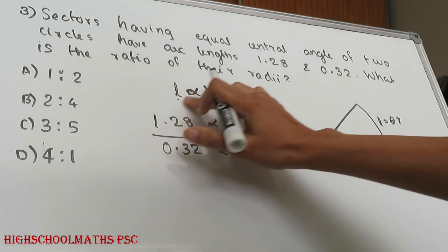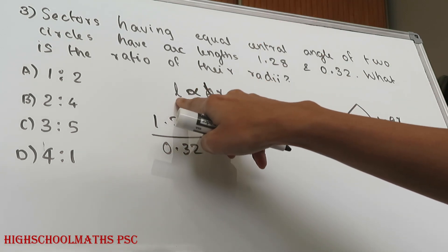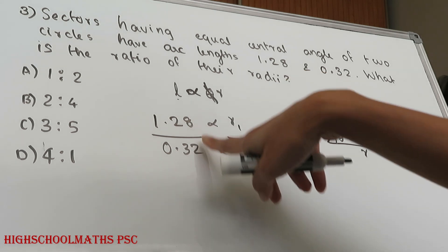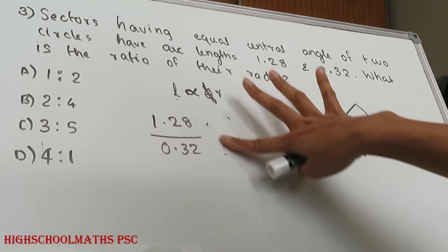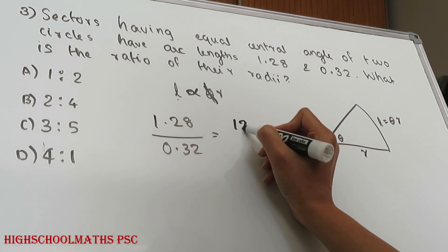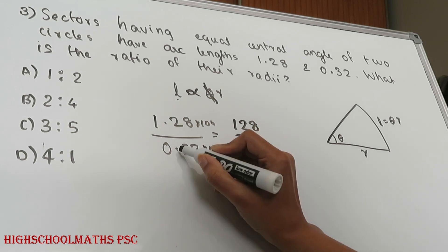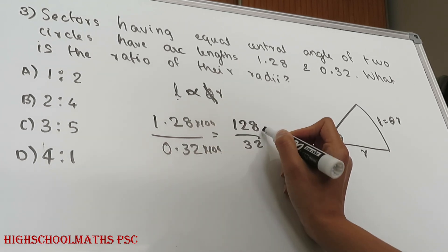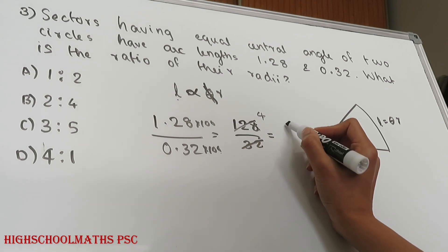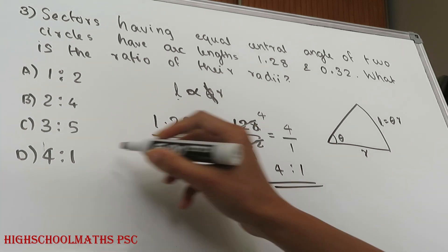We divide 1.28 by 0.32. Since the central angles are equal, the ratio of the arc lengths equals the ratio of the radii. 1.28 divided by 0.32 equals 4. So the ratio of the radii is 4:1. That is option D and the answer.